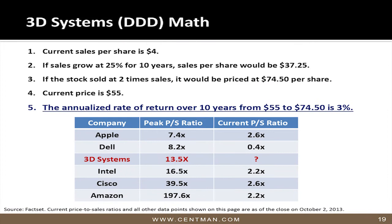Even assuming everything turns out right for 3D printing, I made a projection that for the next 10 years they grow at 25% per year — more than they've ever grown. Their sales would go from $4 to $37. But if at that time it sold at 2 times sales, the stock would go to $74. If it went to $74 from $56, that's about a 3% return over 10 years. That's not worthwhile. And if something goes wrong, it could go down to $16 or $20. You've got a lot of downside and very little upside, so we would not consider buying it at this price.